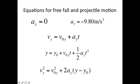For projectile motion, your acceleration in the x direction is equal to zero. Your acceleration in the y direction is equal to negative 9.8 meters per second squared. The negative comes from the fact that you pick up speed heading downward — your velocity becomes an ever greater negative number as time goes by.